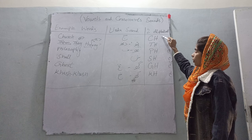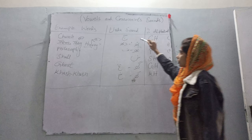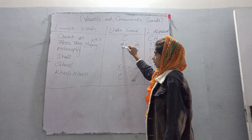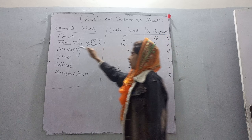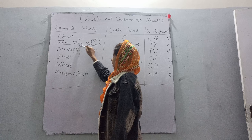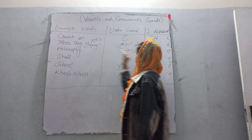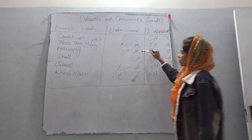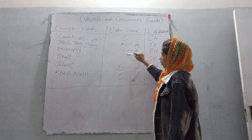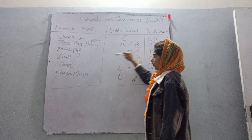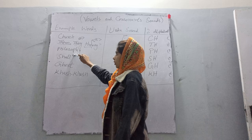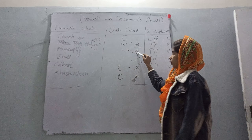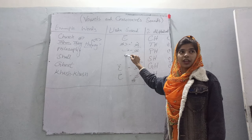Two alphabets and the sound is Th or Th — Them, they, theories. Ch alphabets and the sound is Th or Ka — Philosophy. Th and Th — Th and Th.